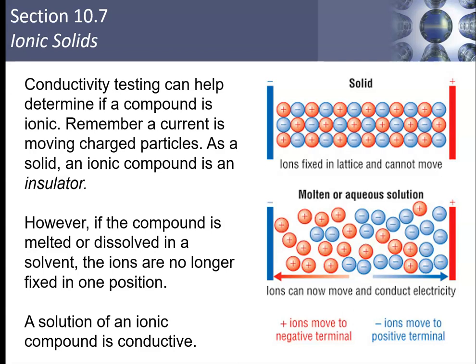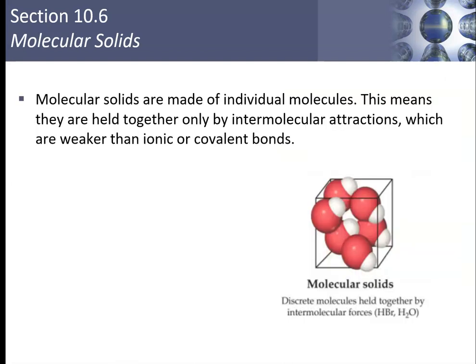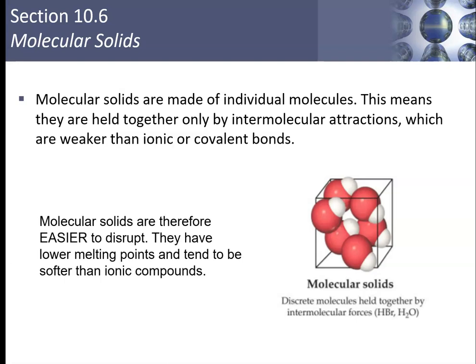This is the sort of thing that shows up on multiple choice questions on the AP exam more often than you would think. Molecular solids are solids made up of individual molecules — think sugar. Sugar is a solid made up of sucrose molecules, meaning they're held together by intermolecular attractions between molecules, which are much weaker than ionic or covalent bonds between atoms. So the forces between molecules are weaker than the bonds inside the molecule.